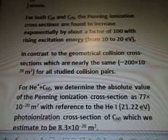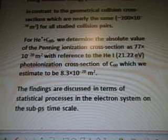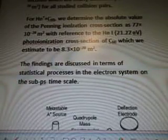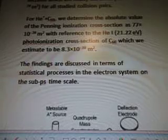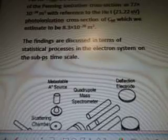In contrast to the geometrical collision cross sections, which are nearly the same, 200 times 10, there's a calculation there I don't know how to read, for all steady collision pairs. For HE star plus C60, we determine the absolute value of the penning ionization cross section as, and here's another calculation there, with reference to the HE 21.22 EV photonization cross section of C60, which we estimate to be 8.3 times 10 to the power of minus 20, and then M squared. The findings are discussed in terms of statistical processes in the electron system on sub-PS timescale.